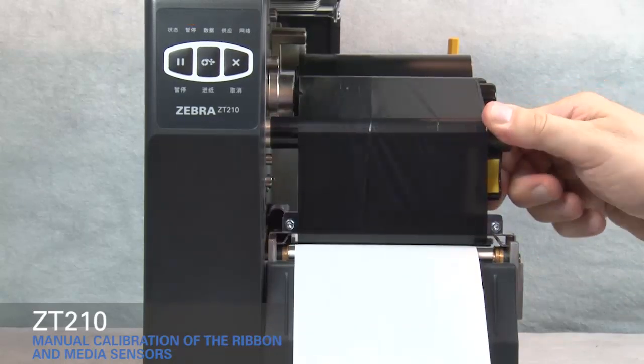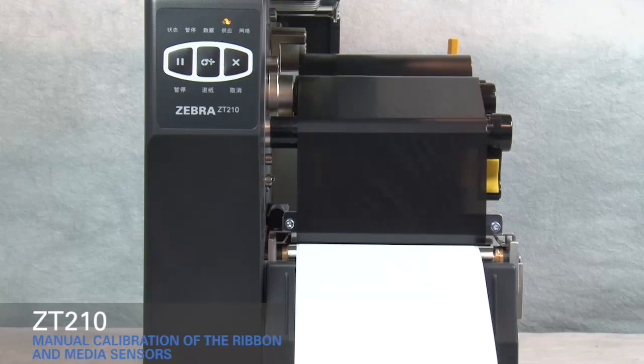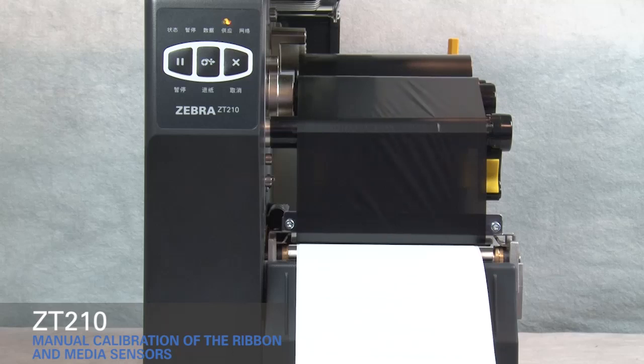Close the printhead. Press pause to calibrate the printer. The supplies light flashes yellow. The process is complete when the supplies light stops flashing and the pause light turns yellow.